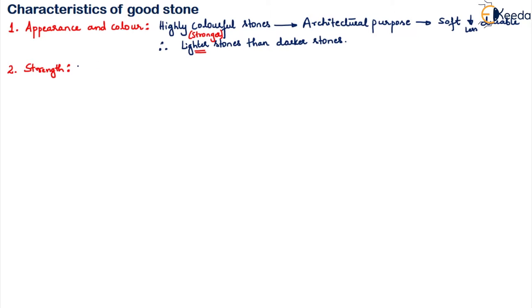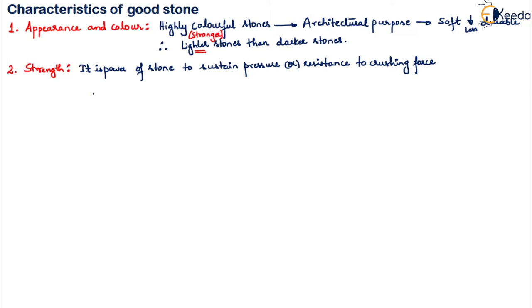The second characteristic is strength. Strength is the power of a stone to sustain pressure — this can also be called the resistance to crushing force. Generally if the stone has a very compact, fine crystalline texture — meaning the molecules are very close to each other and fine in nature — those types of stones will be stronger.